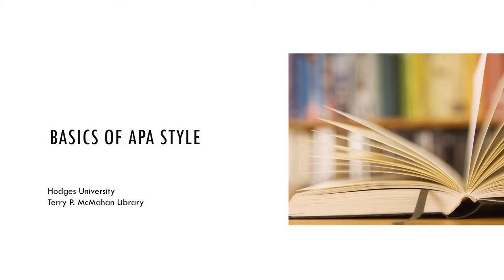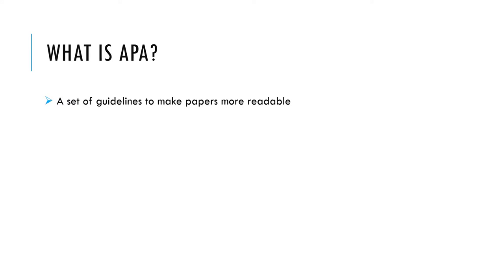Never used APA style before or just need a refresher? The Hodges University Library is here for you. Let's break down the basics. APA style is a set of guidelines that determine the conventions of writing for professional and academic papers. This includes how the paper is formatted, how punctuation is used, the word choice in your writing style, and how you give credit to your sources. This may seem daunting but I promise it will become easy with practice.